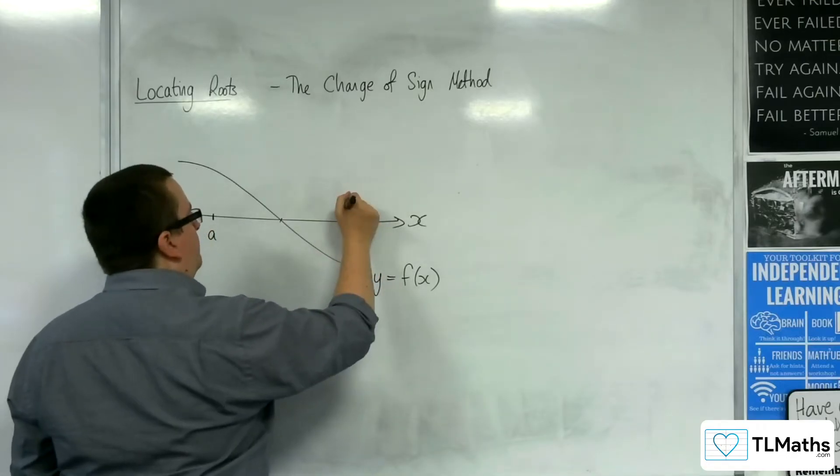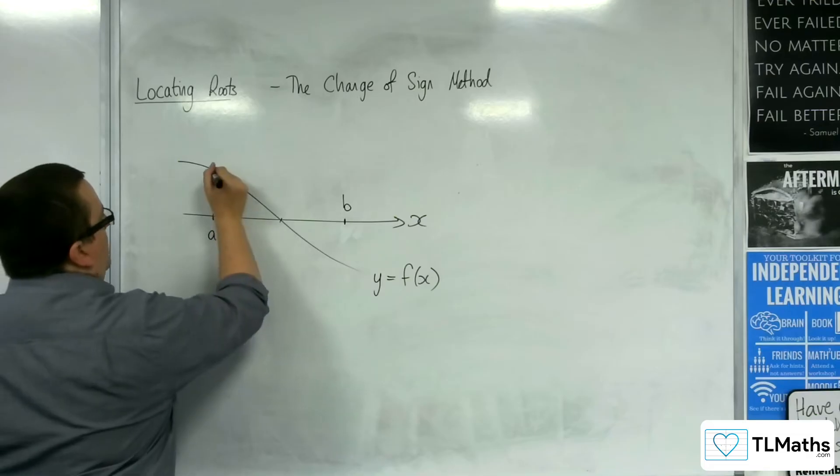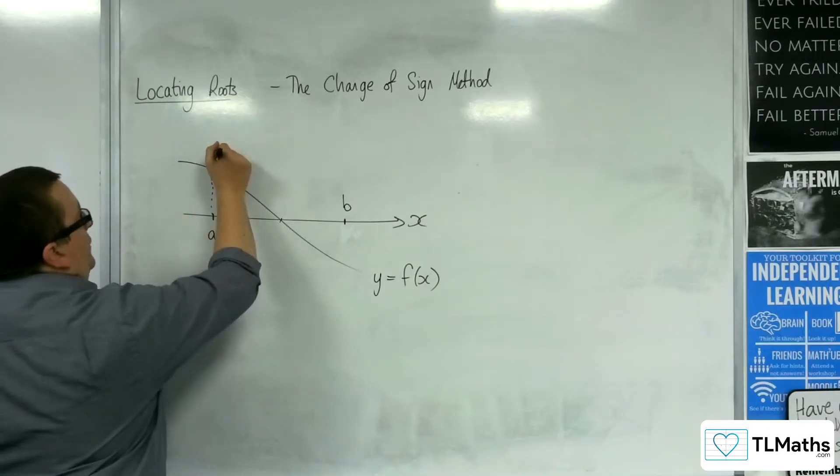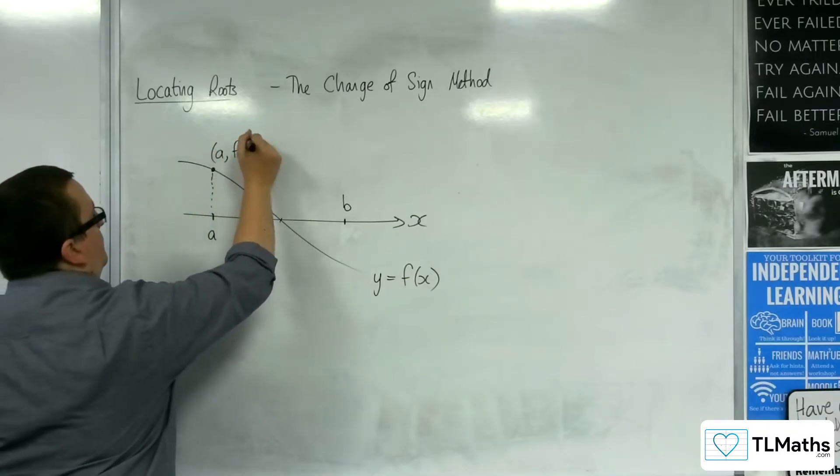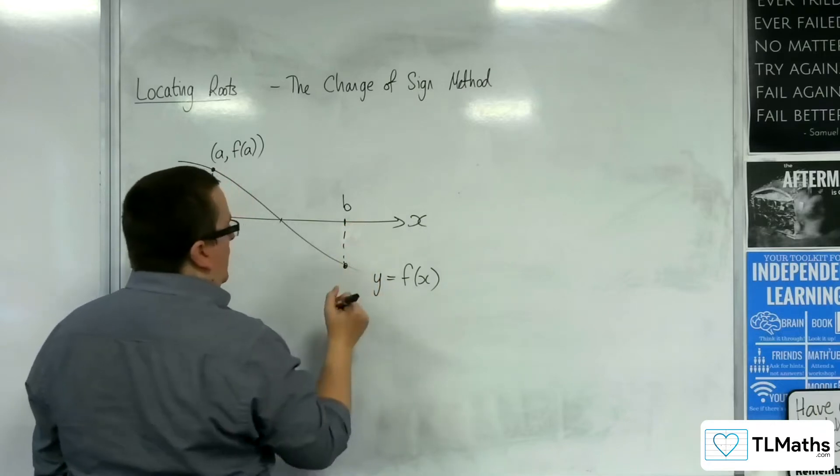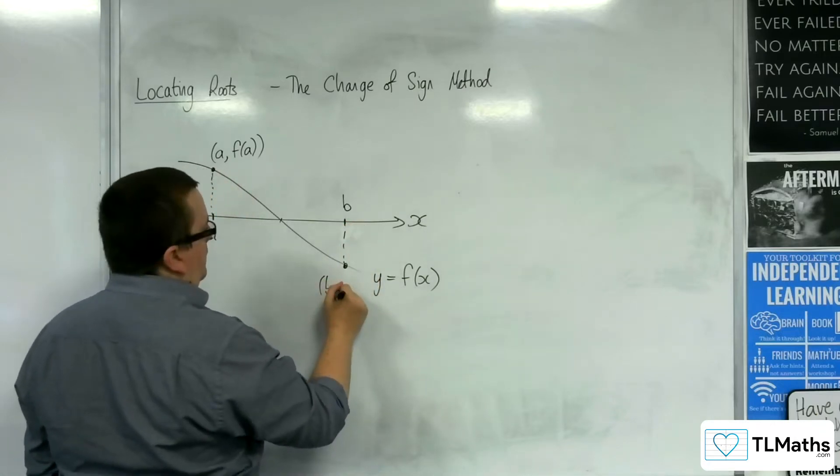Now I'll write it up this way. Then this point that is on the curve is the coordinates (a, f(a)). And this point that is on the curve will be (b, f(b)).